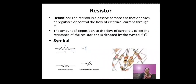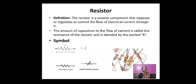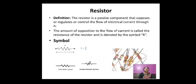In this video we will see the passive components: resistor, inductor, and capacitor. A resistor is a passive component that opposes or controls or regulates the flow of electric current. Resistance is denoted by R. This is the symbol of resistor — both fixed resistor and variable resistor symbols are shown.